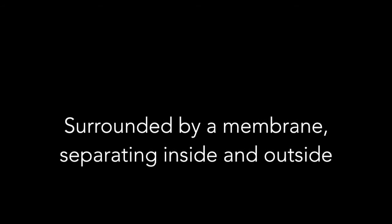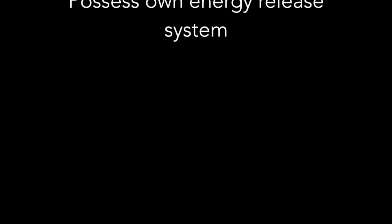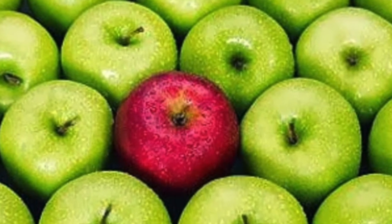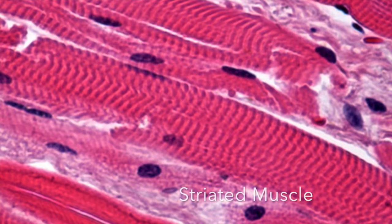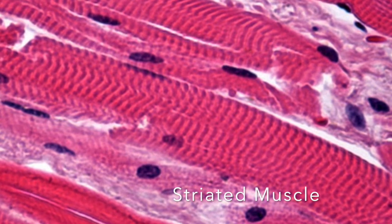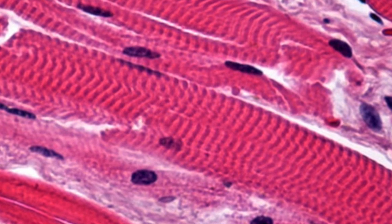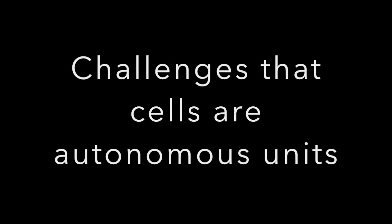In our modern cell theory, there are several other parts which reinforce how we define whether something is alive or not. However, there are some discrepancies — several organisms are atypical and cannot be fully explained by the cell theory. For one, striated muscle is the type of muscle that allows us to move our skeleton. An individual cell can be as long as 300 millimeters, may contain several hundred nuclei, and challenges the idea that cells always function as autonomous units.